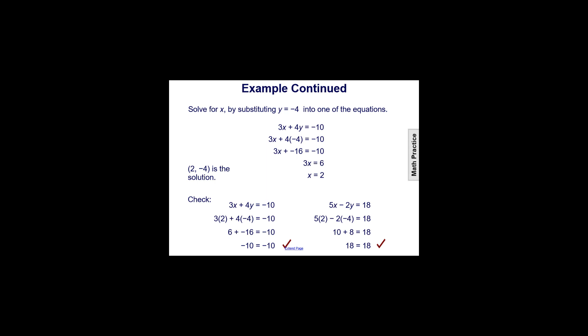Now we have to solve for the other variable. We'll substitute in y equals negative 4 into one of the original equations. We're choosing the equation 3x plus 4y equals negative 10. Notice we're choosing an original equation — because if you made a mistake when multiplying, it's best to use the original. Substituting in y equals negative 4, we get 3x plus 4 times negative 4 equals negative 16, equals negative 10. Adding 16 to both sides and dividing by 3, we get x equals 2. So (2, negative 4) is the solution — the same solution as before. When we substitute and check, we still get true statements, confirming it is the solution.